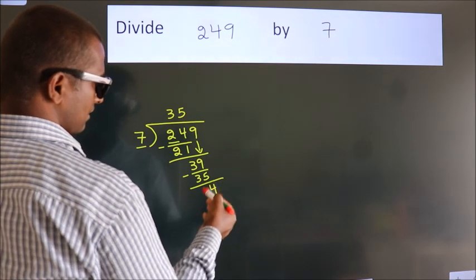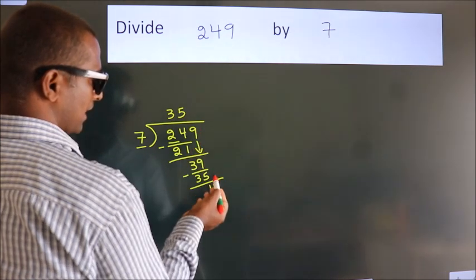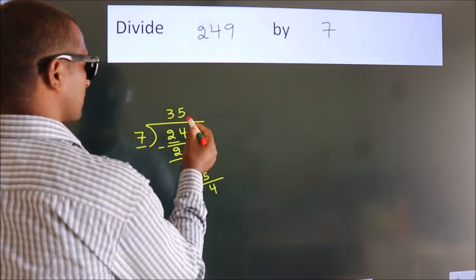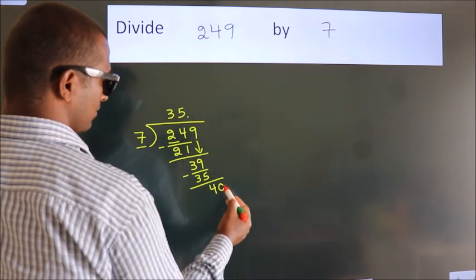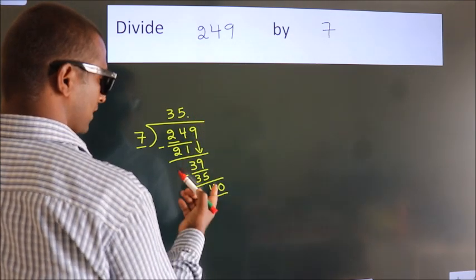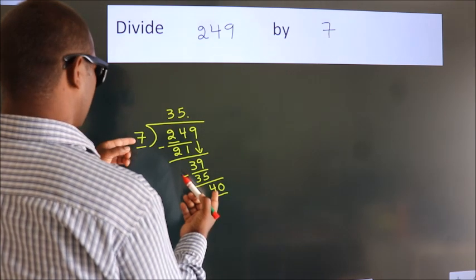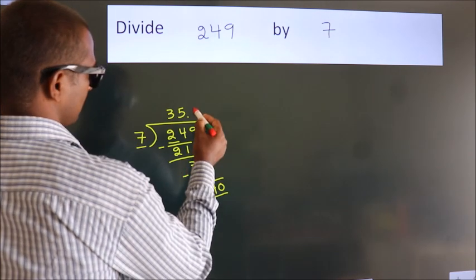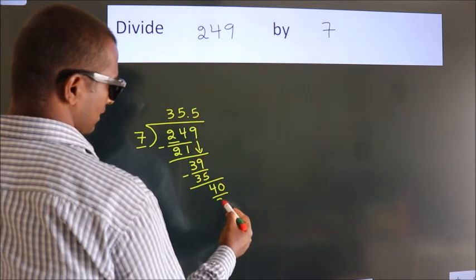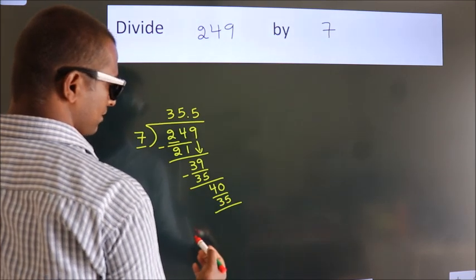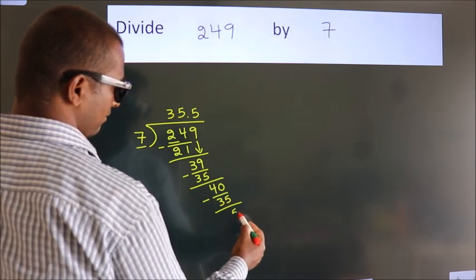After this, no more numbers to bring down. So what we do is we put a dot and take 0. So 40. A number close to 40 in the 7 table is 7 fives, 35. Now we subtract. We get 5.